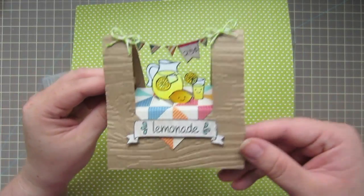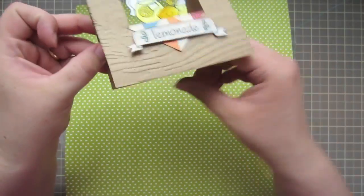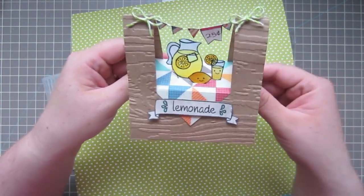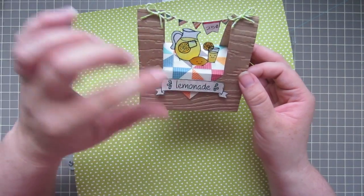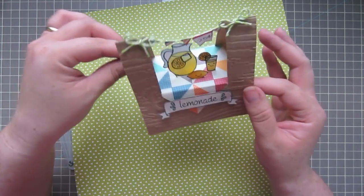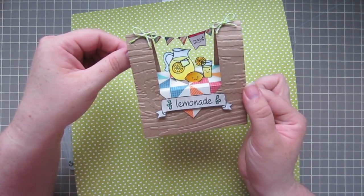It's just a little pop-up lemonade stand that I made, and you can fold it down into an envelope if you wanted to mail it. It's featuring a whole bunch of lawn fawn stamps, and I think it's just super cute, so I'm going to show you guys how to make it.